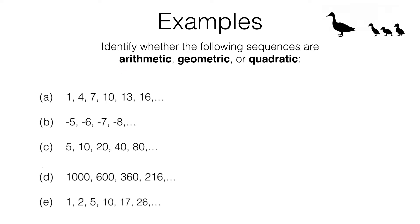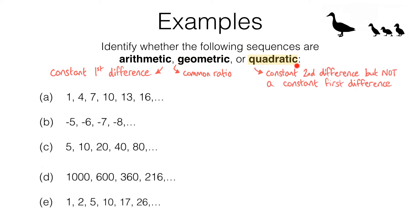The idea is to be able to look at a sequence and decide which type it is. Here are the things you need to know. An arithmetic sequence has a constant first difference. A geometric sequence has a constant common ratio, and a quadratic sequence has a constant second difference but does not have a constant first difference. I'll explain what all of that means once we get into the questions.